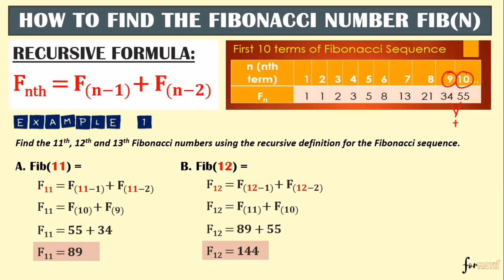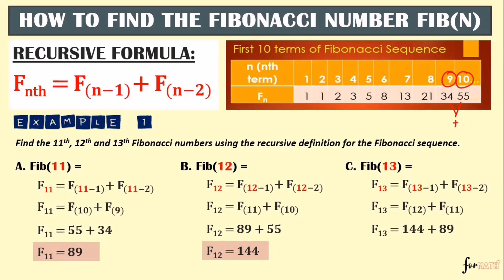For the 13th term, we have F(13-1) + F(13-2): we need F12 and F11. The 12th term is 144 and the 11th term is 89. So therefore, when we add them, the result is 233, which is our 13th term.